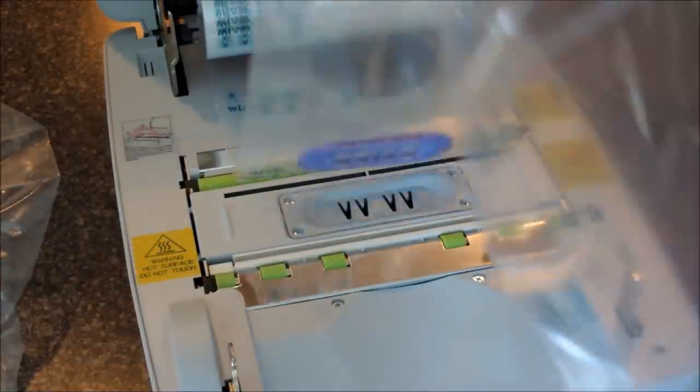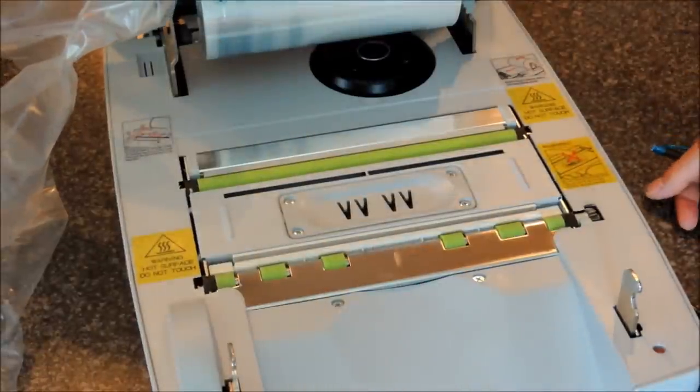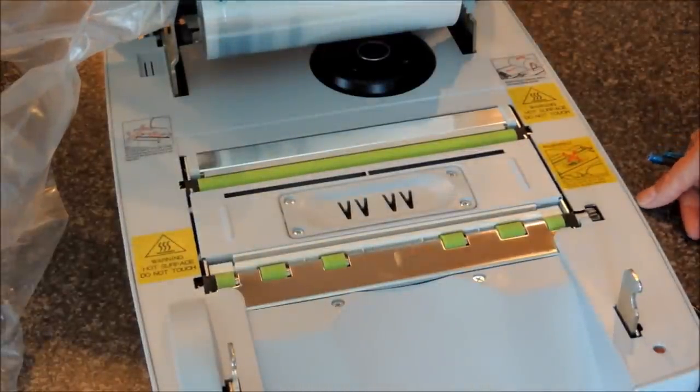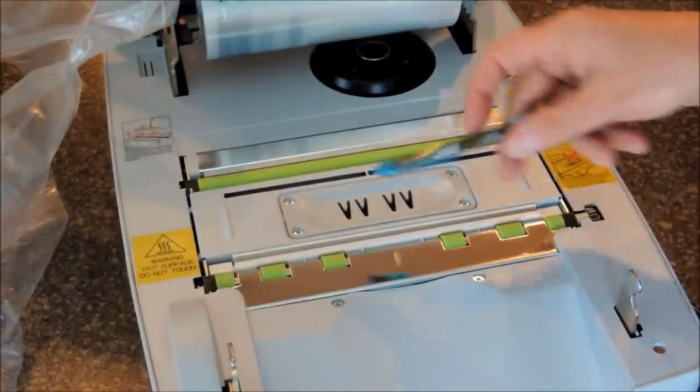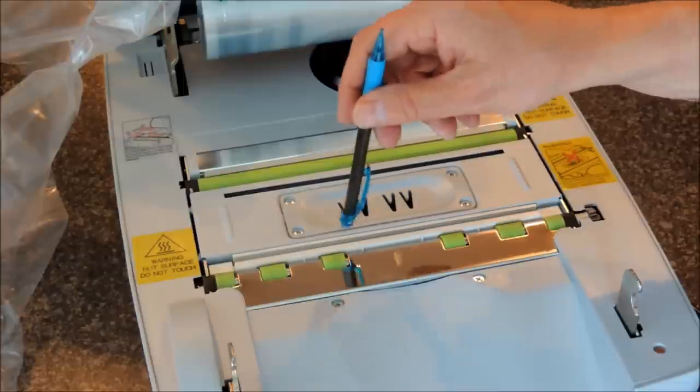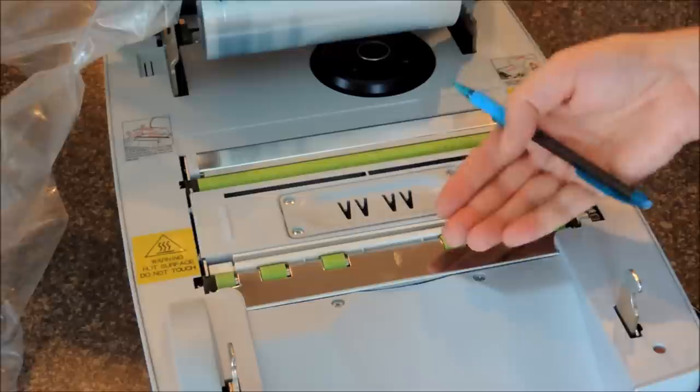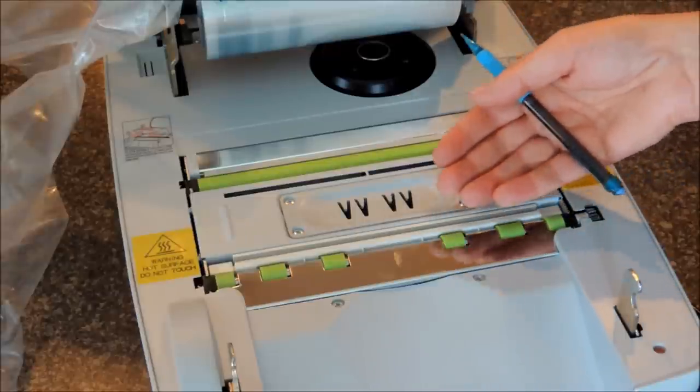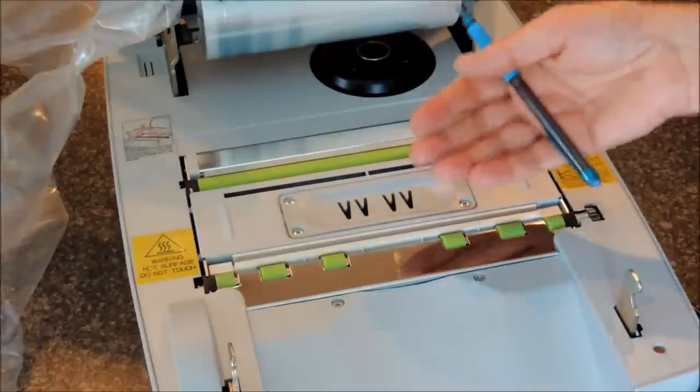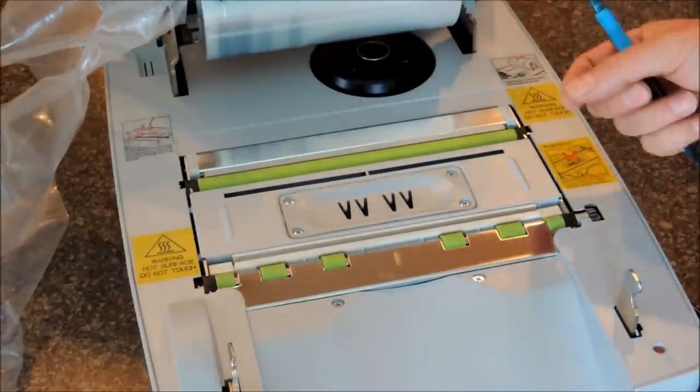There are three points within the machine that you want to make sure that no hands are exposed to. One is this sealing bar here and the silver plate in front of it. It warms up when the machine is operating. The sealing bar is used to actually seal the air cushions.